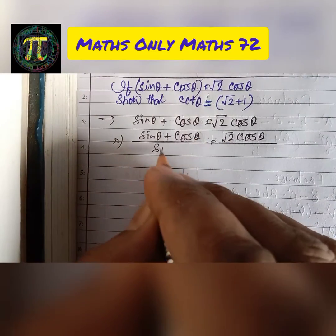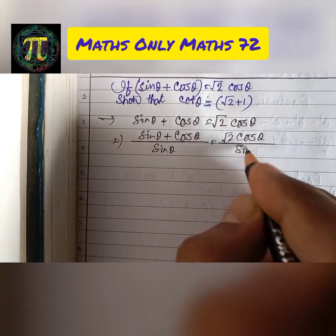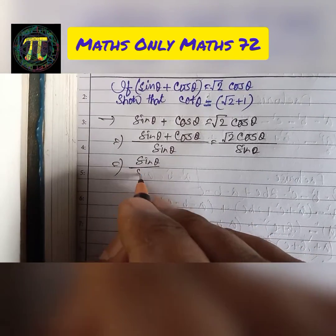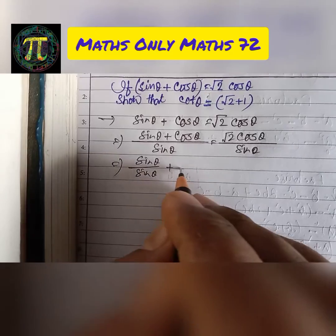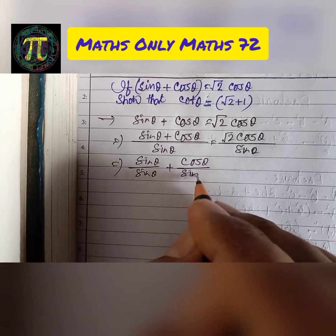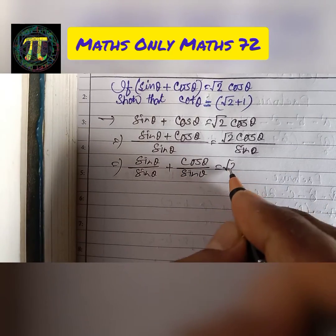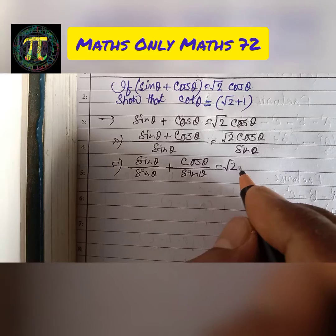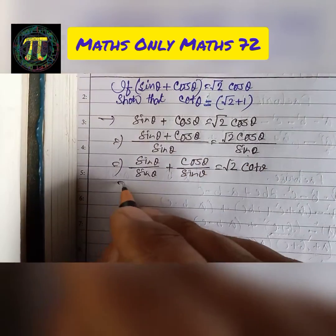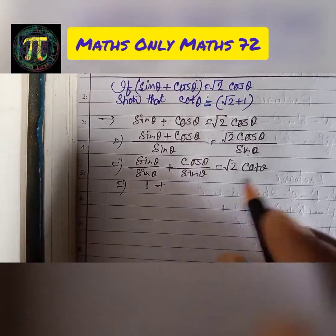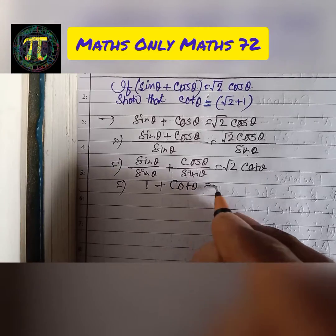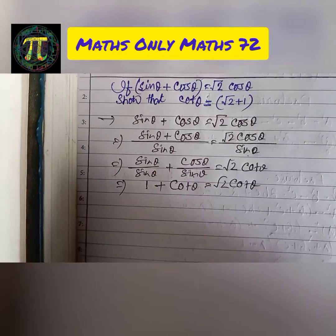We divide both sides by sin theta. We get sin theta by sin theta plus cos theta by sin theta equals root 2 cos theta by sin theta. Since cos theta by sin theta is cot theta, we have 1 plus cot theta equals root 2 cot theta.